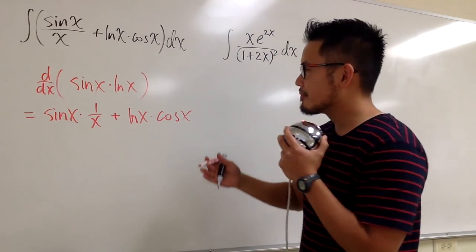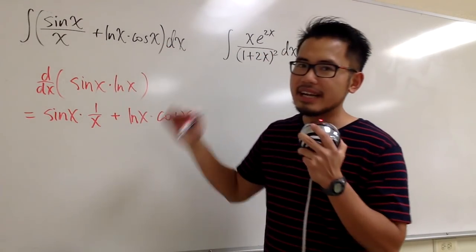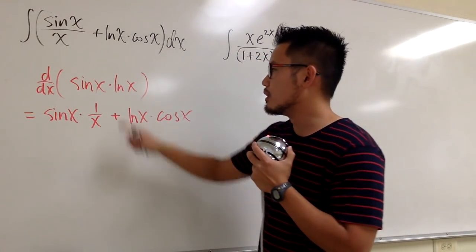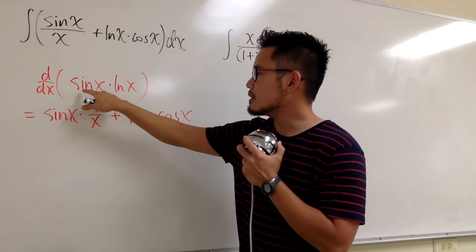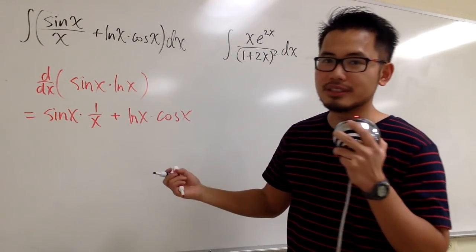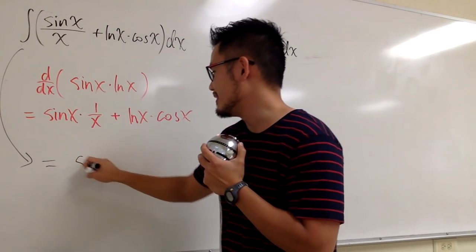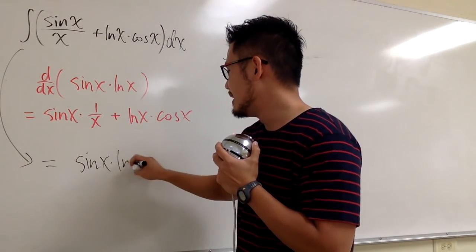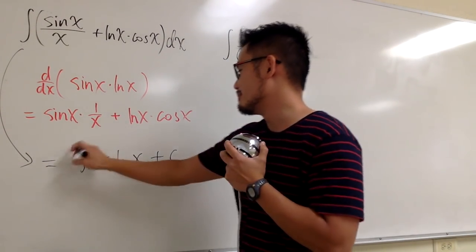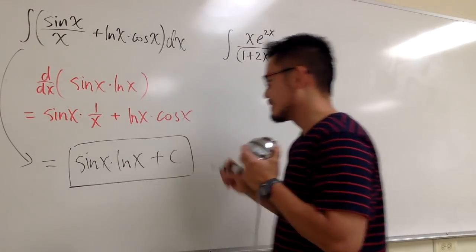As you can see, this right here is exactly the result of the product rule of the derivative of sin x times ln x. So, what does that mean? Well, we must have the answer being sin x times ln x, and then we are done, plus c. That's all.